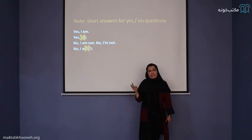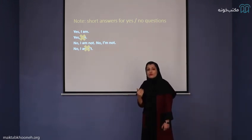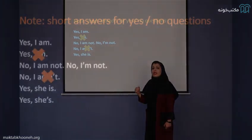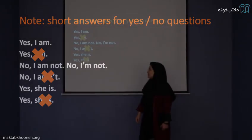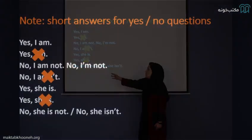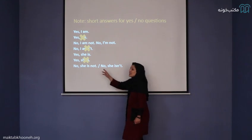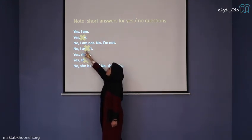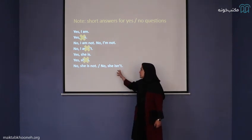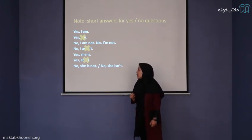For she, he, they, and it — for example: is she happy? If the answer is yes, we say: yes, she is. We never say 'yes, she is' with a contraction. If the answer is no: no, she is not, or no, she isn't. Similarly for 'are': no, they aren't — that is correct.